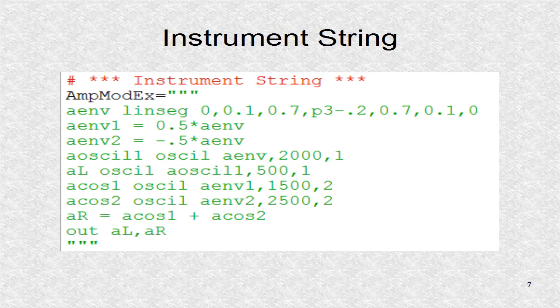This is the instrument string. First the Lensec opcode is used to create an envelope. The amplitude is 0.7 except at the ends, where it goes to zero.